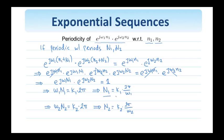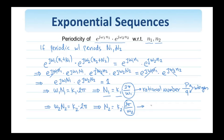Clearly, since capital N1 must be an integer and k1 is an integer, for this equality to hold true, 2 pi over omega 1 must be a rational number — that is, the ratio of two integers p over q. The same must hold true for 2 pi over omega 2. So, as long as 2 pi over omega 1 and 2 pi over omega 2 are rational numbers, I can always find a capital N1 and a capital N2 so that the two-dimensional complex exponential is periodic with respect to n1 and n2. That's what we should keep in mind.